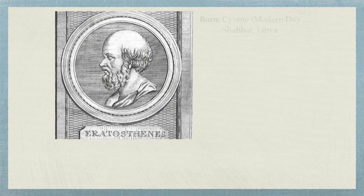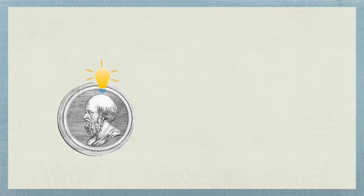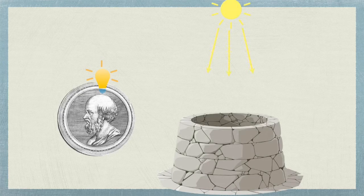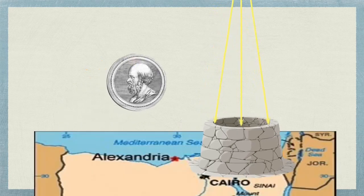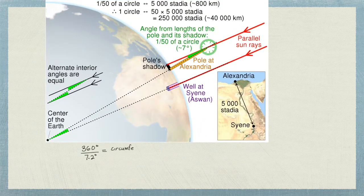Eratosthenes is famous for measuring the circumference of a sphere using logical reasoning. Knowing that the sun shines directly inside a well in Cyene, known today as Aswan, once a day during the summer solstice, he stuck a stick on the ground to measure the angle of shadow that the stick casts from the sun's ray. Using this model, he calculated the circumference of the circle.